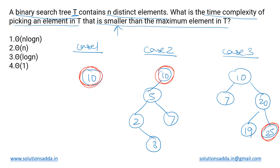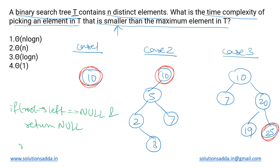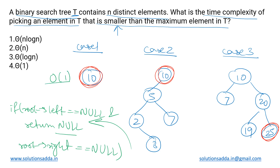We need to find an element smaller than the maximum. In case one, there is just the root, which is the maximum element itself, and there is no node smaller than it, so we return null. To check this, we use the condition: if root.left is null and root.right is also null, then return null. There is no traversal involved — it simply takes constant time.